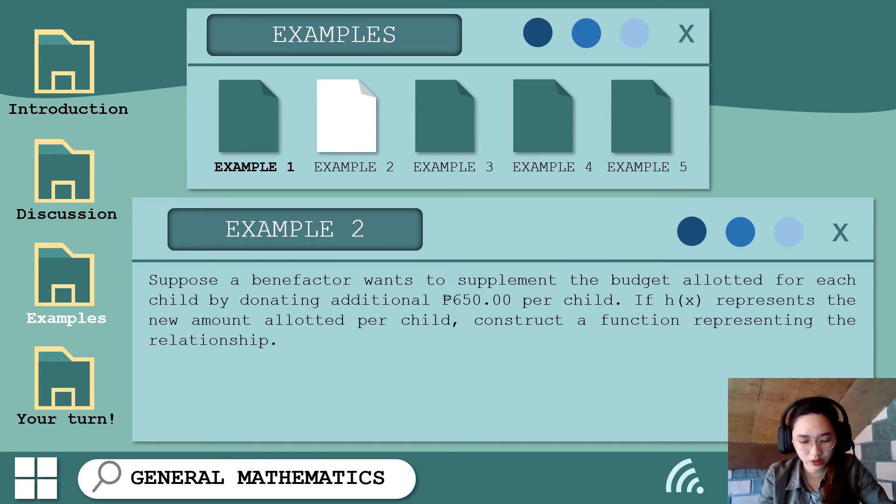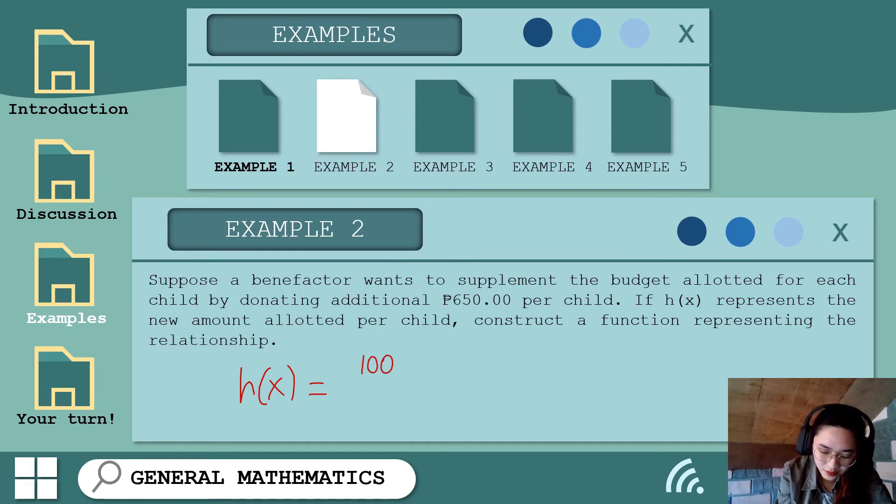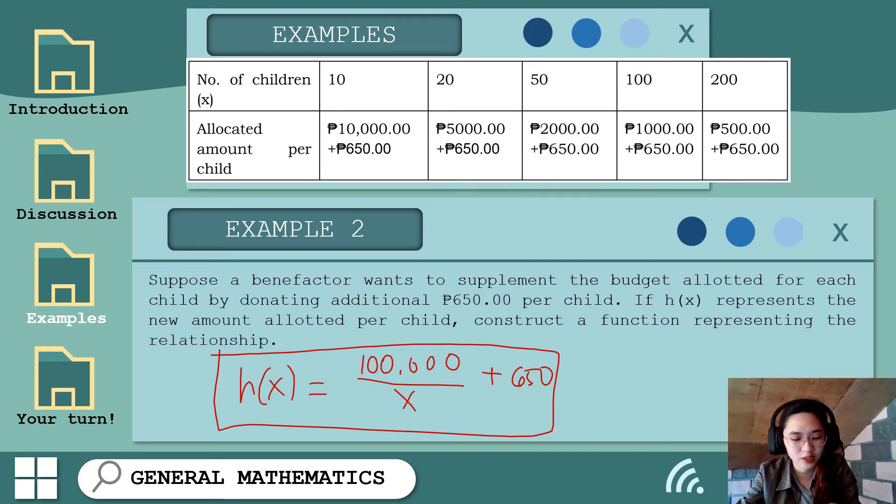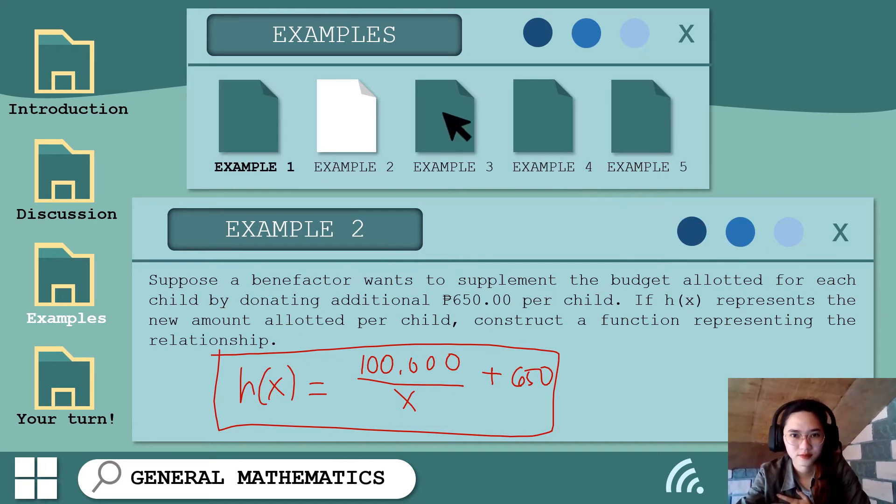Sa example number 2 natin, modify lang natin yung situation dun sa example number 1 na kung saan merong benefactor na gusto mag-supplement ng budget allotted for each child by donating additional 650 pesos per child. If h of x represents the new amount allotted per child, construct a function representing the relationship. Since meron naman na tayong computed na allotted budget ng LGU per pupil, mag-add na lang tayo ng 650 pesos. So mangyari, 100,000 divided by x - again, yung x po natin, yung number of child - plus mag-add na lang po tayo ng 650 pesos. So ito na po yung h of x natin that represents yung new amount allotted per child. Kung titignan ninyo dito sa table na ito, yung allotted amount kanina sa example number 1, mag-add lang tayo ng 650.